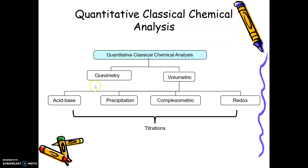For quantitative classical chemical analysis, it involves 2 methods: gravimetric and volumetric. Under volumetric, there are several types: first is acid-base, precipitation, complexometric, and redox.